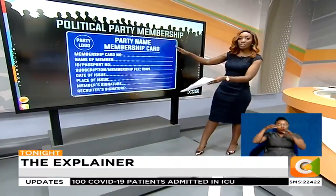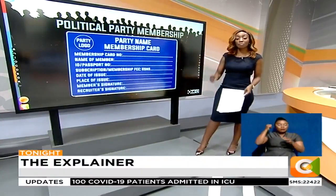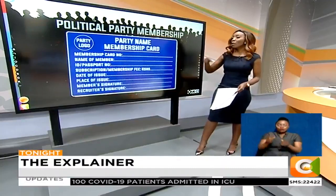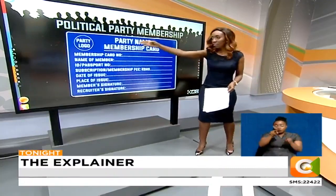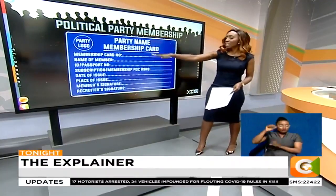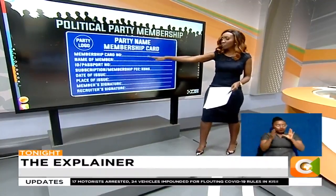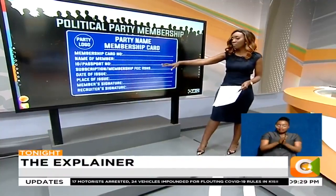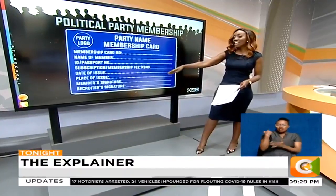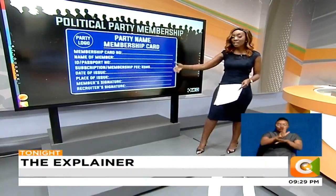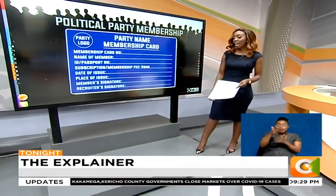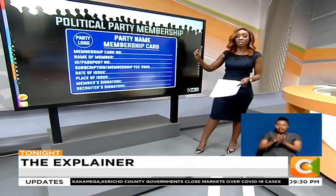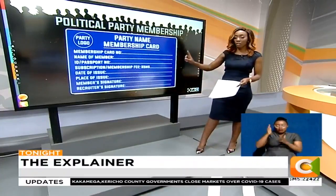Here is what that typical party membership card should look like, issued to you upon membership. It should have the party logo and the party name, your membership number, your name, your ID or passport number — whatever you used to register — the date and place of issue, and it should have your signature and that of the recruiter.